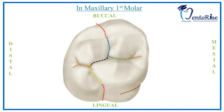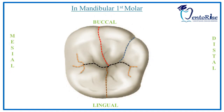On the occlusal surface of maxillary first molar, the confluence of grooves forms pits: the one towards the mesial side is called the mesial pit, the one in the center of the occlusal surface is called the central pit, and the one towards the distal side is called the distal pit. Similarly, on the occlusal surface of mandibular first molar, we can observe the mesial pit towards the mesial side, the central pit at the center of the occlusal surface, and the distal pit on the distal side.